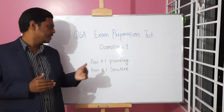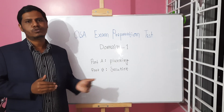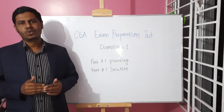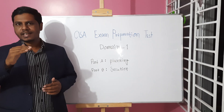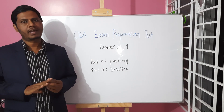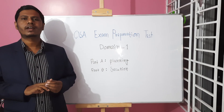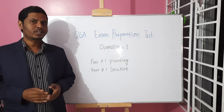This domain has two parts: Part A, Planning, and Part B, Execution. The audit process has mainly three phases: Planning, Fieldwork, and Execution.